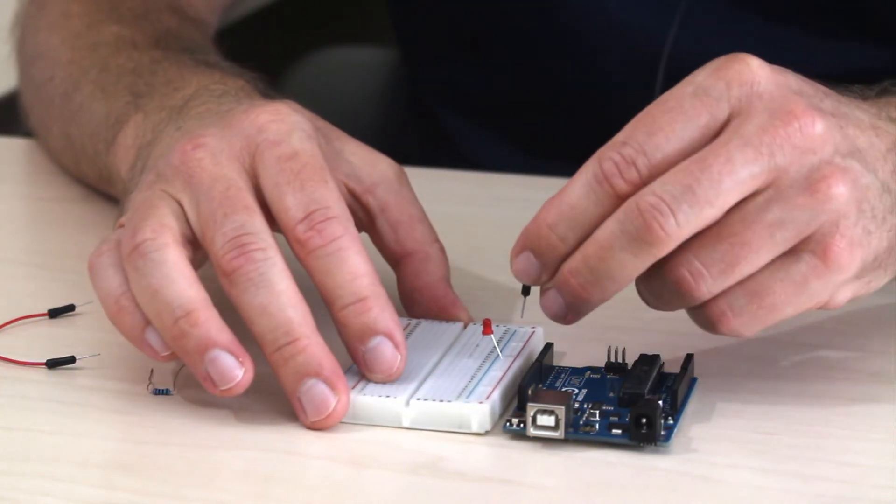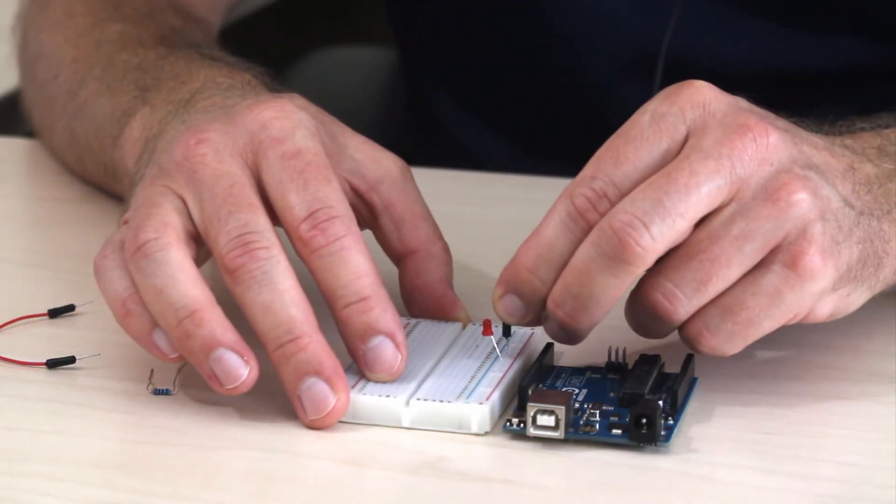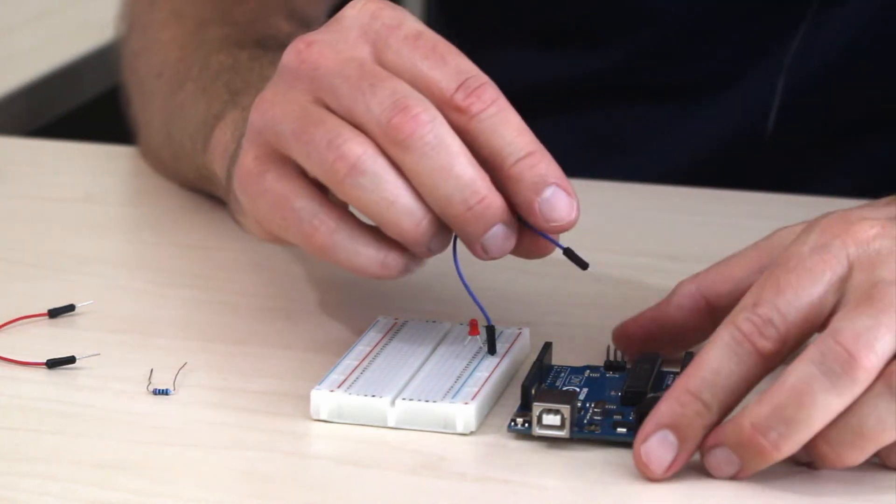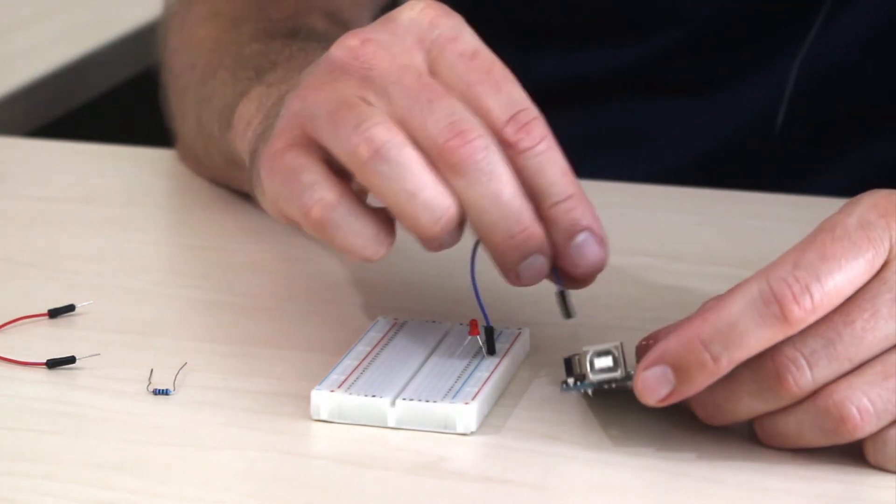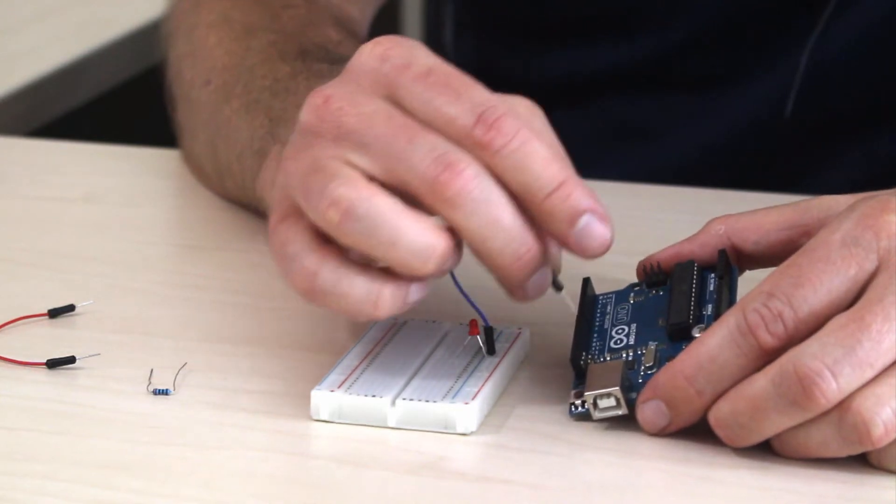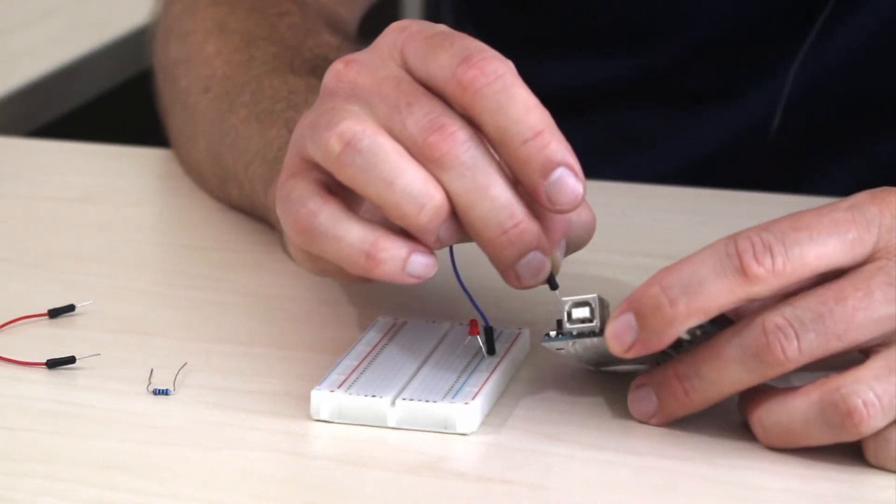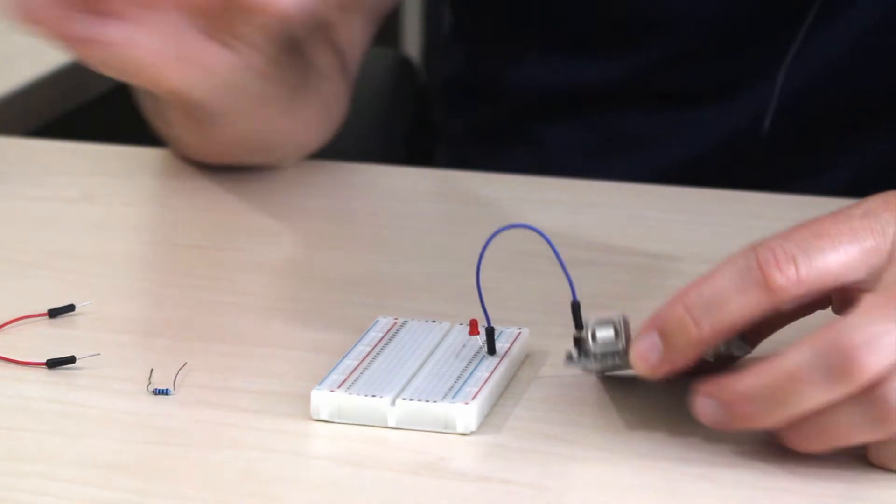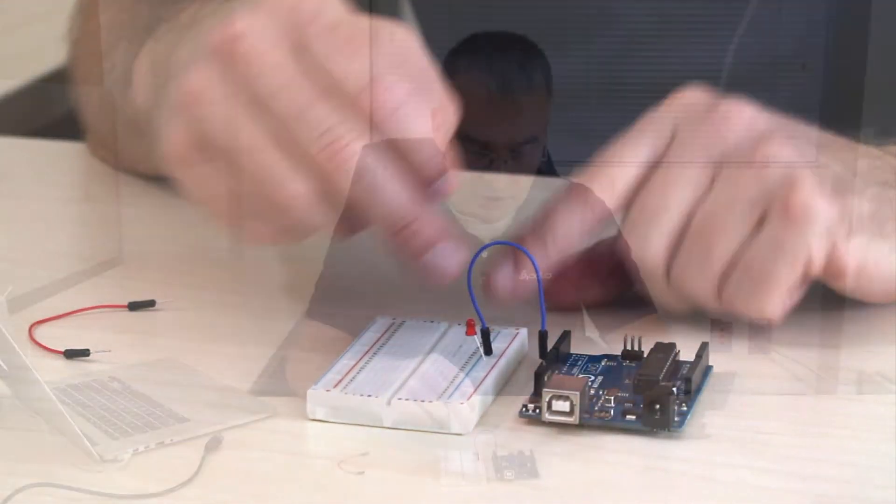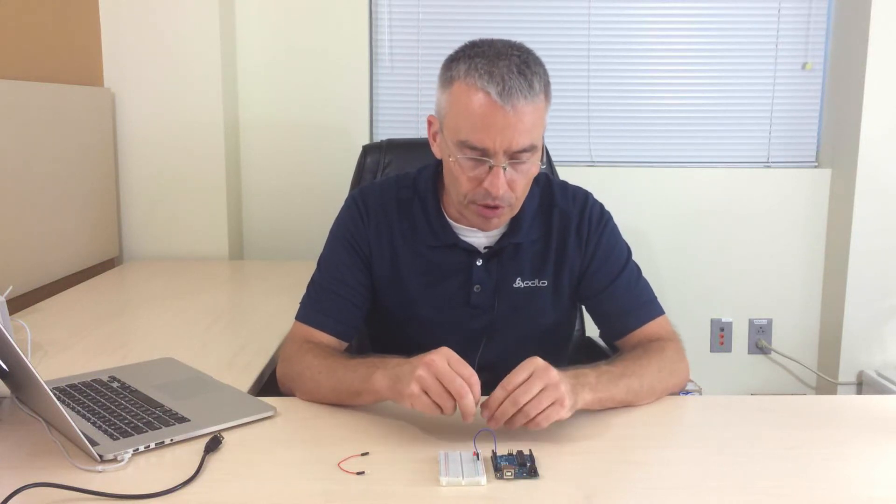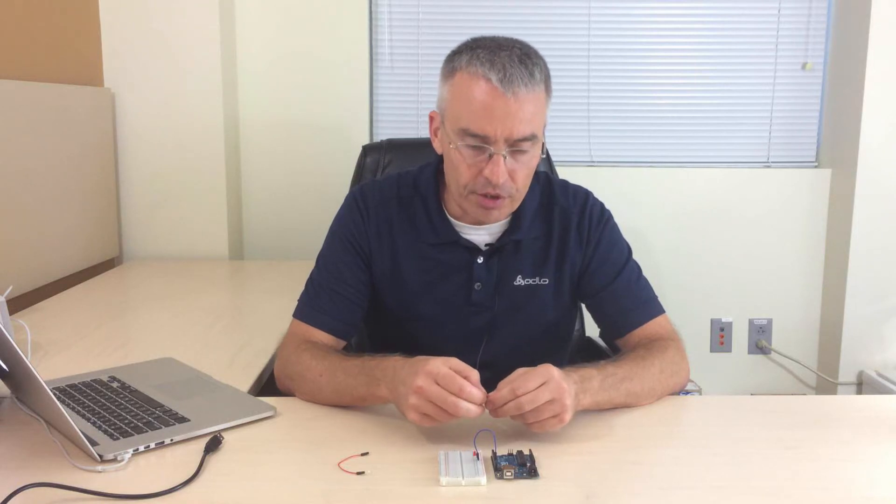The first step is to connect the power rail, the negative power rail, to one of the ground connections on the Arduino. There's conveniently one on the side where the digital pins are, labeled GND. Now on the other end of the LED we connect that to pin 6, but remember LEDs run at about 2 volts and the Arduino board puts out 5, so we have to put a resistor in series.